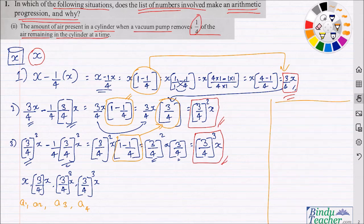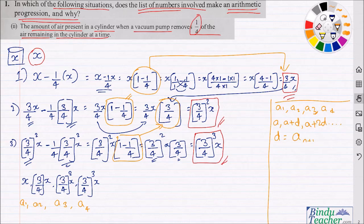In an arithmetic progression, if we have numbers a1, a2, a3, a4, they are said to be in arithmetic progression if they are of the form a, a+d, a+2d, and so on, where d is the common difference. The common difference d can be calculated by subtracting a_n from a_(n+1); for example, d = a3 − a2, and it should also equal a2 − a1. Now let's apply this to our list.